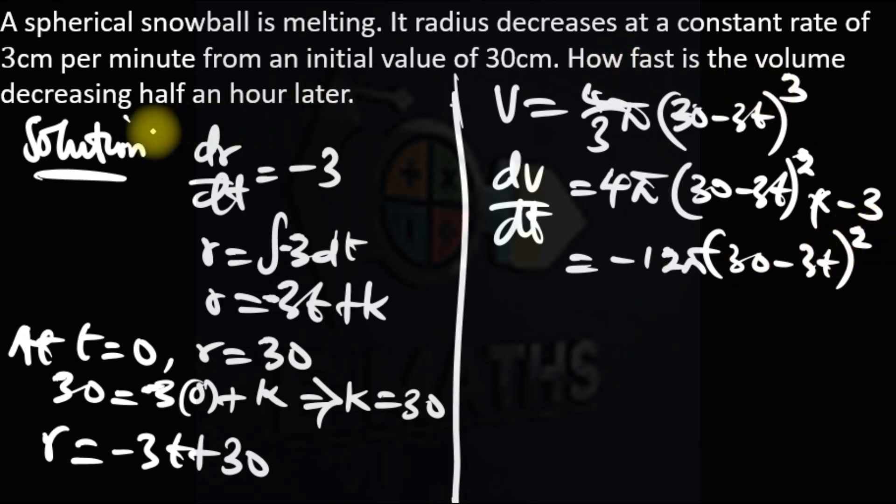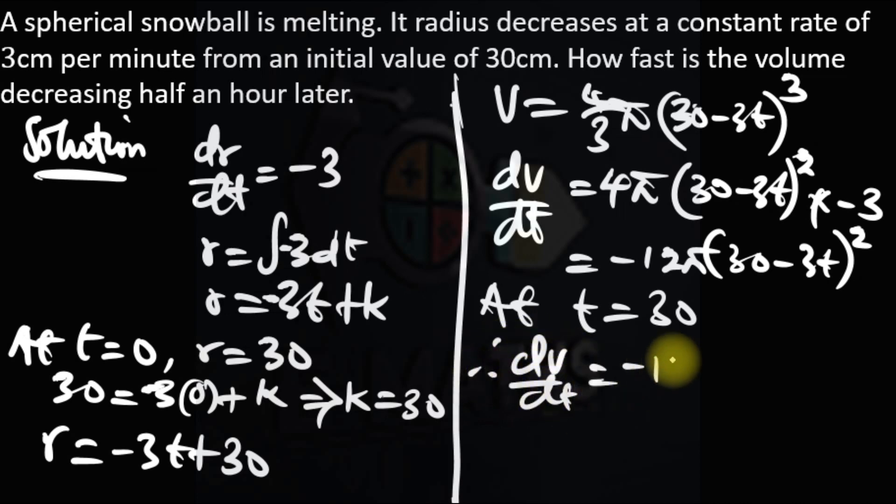How fast is the volume decreasing half an hour? At time t equal to 30, because we are given in terms of minutes, so half an hour is 30 minutes. We substitute t as 30. Therefore dV/dt is minus 12 pi times 30 minus 3 times 30 all squared.